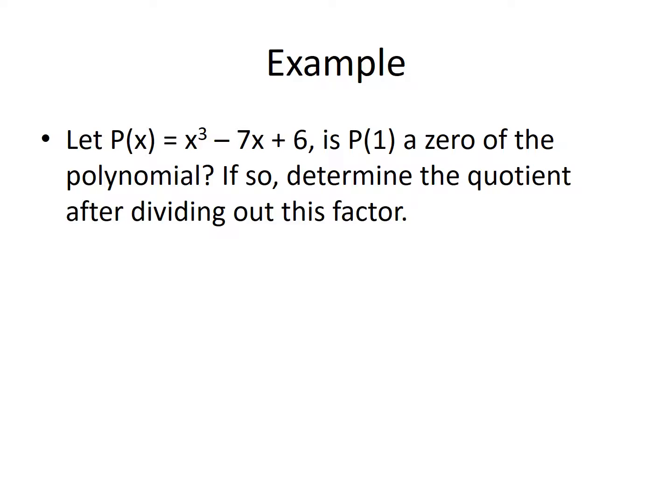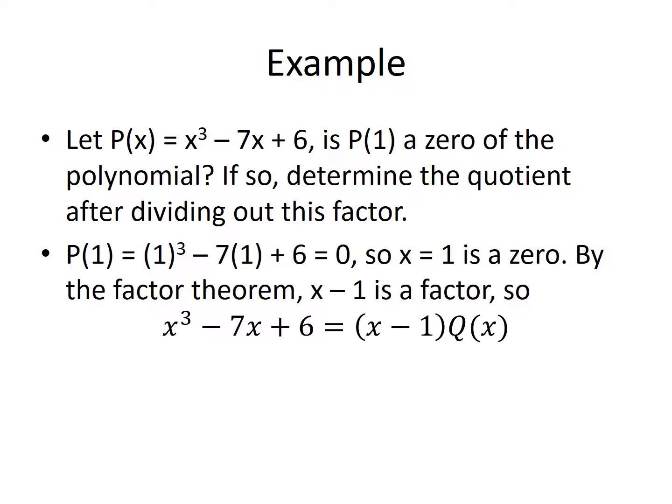Here's an example. Let p of x equal x cubed minus 7x plus 6. Is x equal 1 a zero of the polynomial? We plug 1 into the polynomial, do the arithmetic, and we get zero. So x equal 1 is in fact a zero. Since 1 is a zero, by the factor theorem, x minus 1 is a factor.